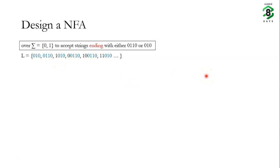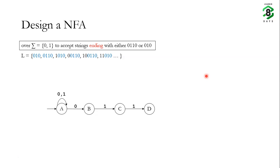Let's start by designing a NFA for this language. We begin with an initial state a. On state a, if we receive a 0 or a 1 we remain there. But if we receive a 0 we go to b, and if we receive a 1 we go to c. If we receive a 1 at c we go to d, and if we receive a 0 at d we go to a final state e. This NFA accepts strings ending with 0110.